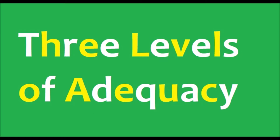2. Descriptive adequacy. A theory that accounts both the data and the native speaker's judgments about the grammaticality of a sentence is considered as descriptively adequate.